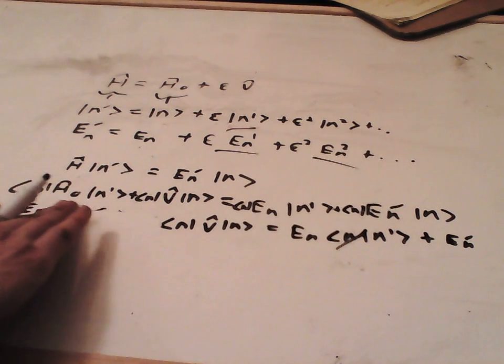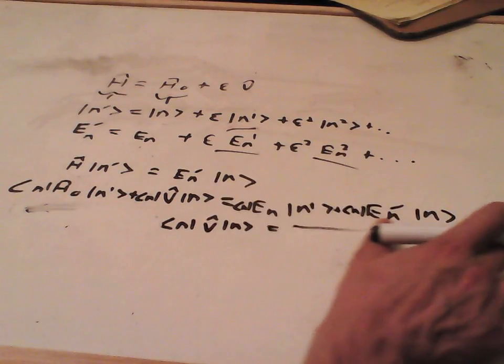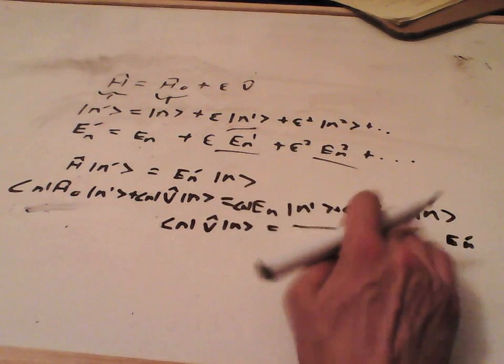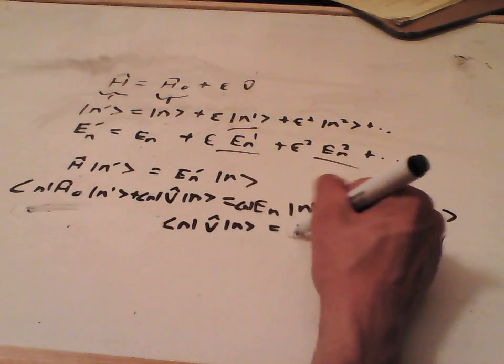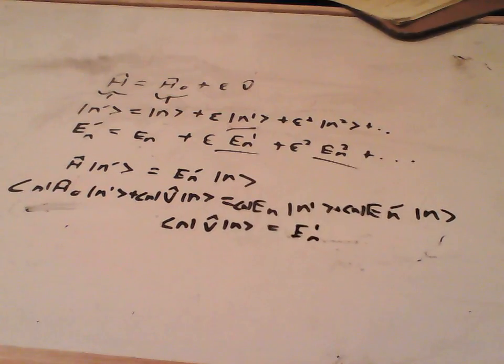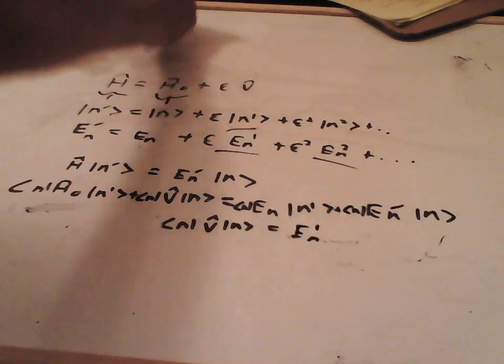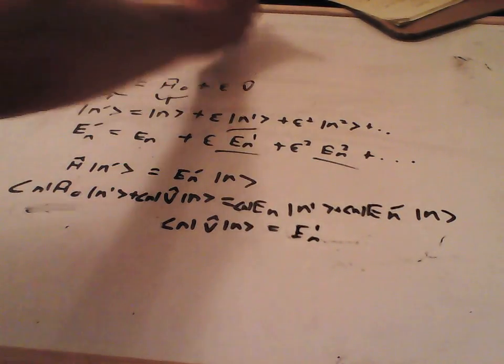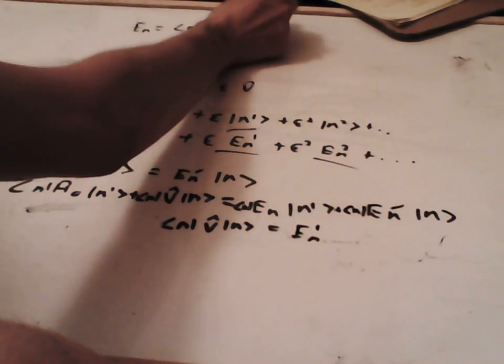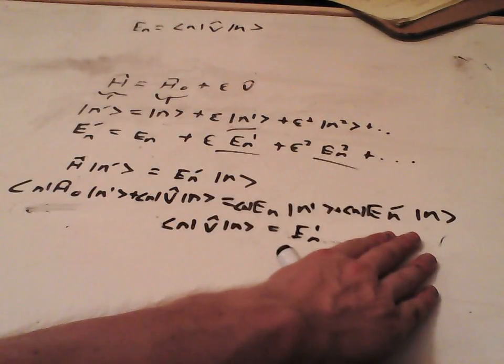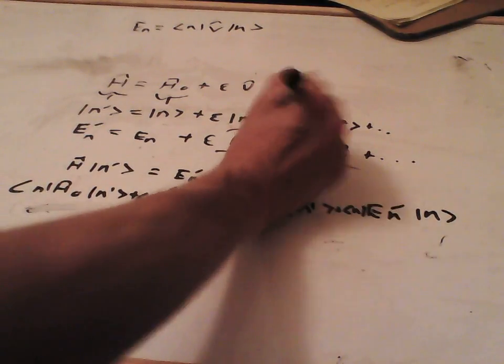And that gives us that first order, we have that En1 is equal to this thing here. And that's a useful thing to remember. Of course, it's really easy to remember. So, we have that En1 is equal to n V n. So, now we've found that. We have found that.